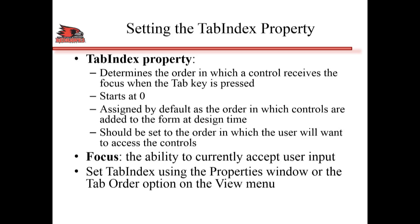There are two ways of viewing the tab index for each control. You can go to the property window for the control and look up its tab index, or you can go to the View menu and click Tab Order to see what the index is for each control.